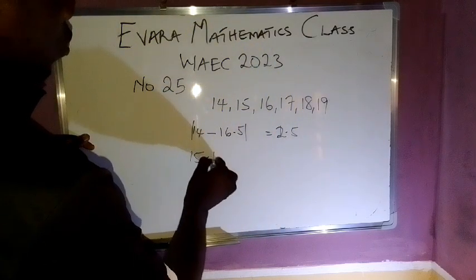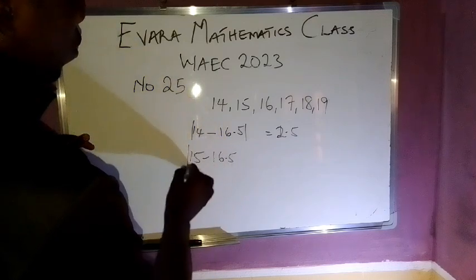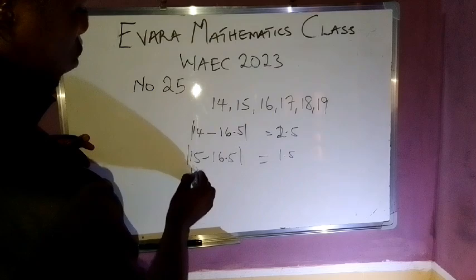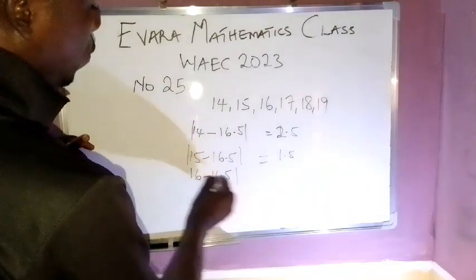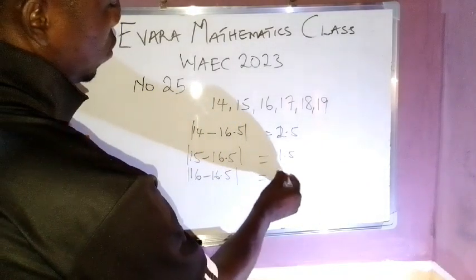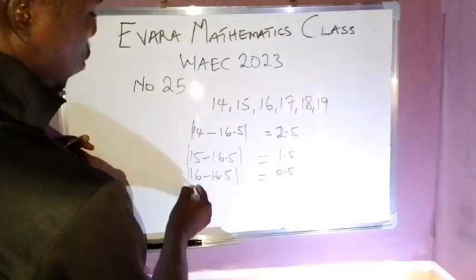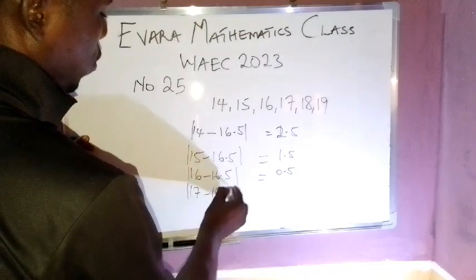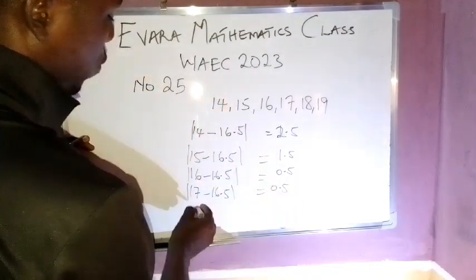15 minus 16.5 gives 1.5. 16 minus 16.5 is 0.5. 17 minus 16.5 is 0.5.